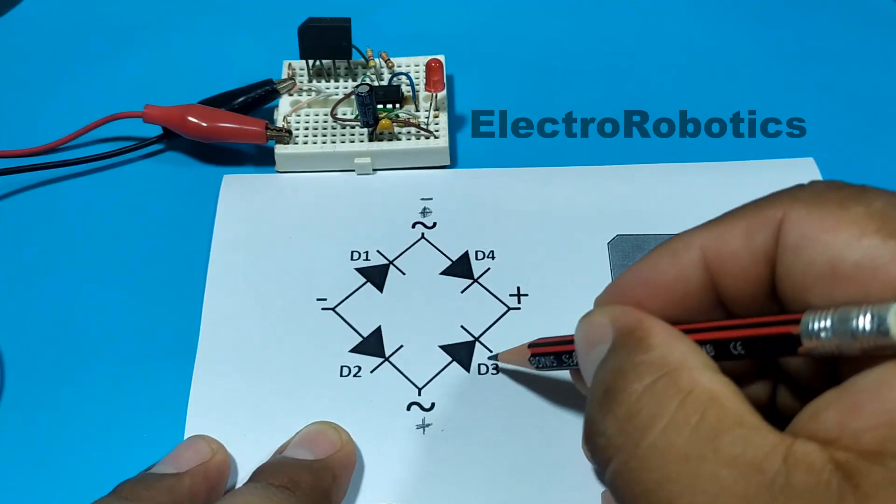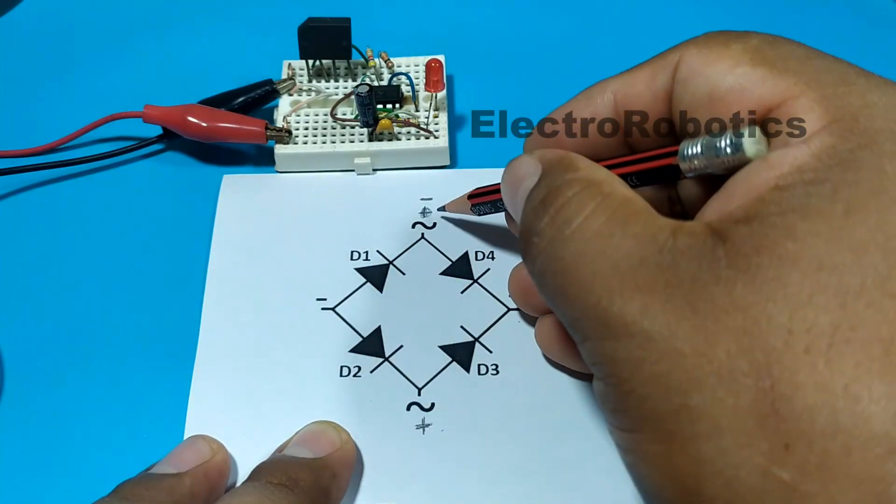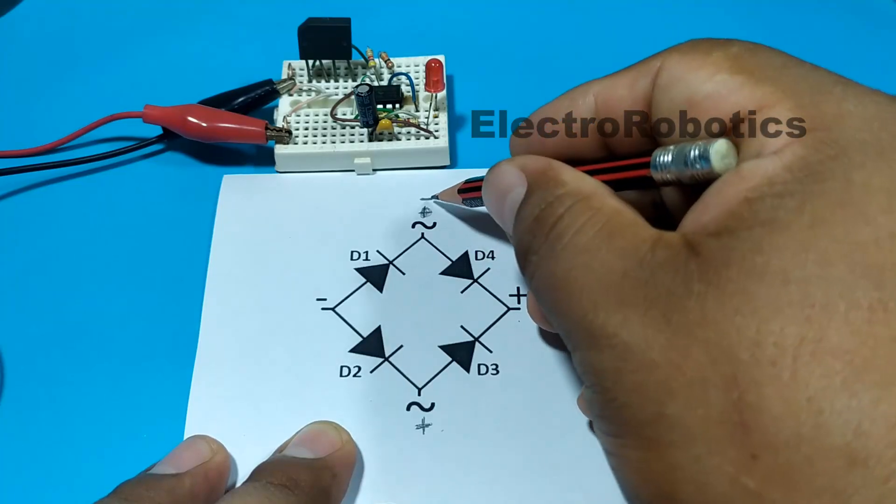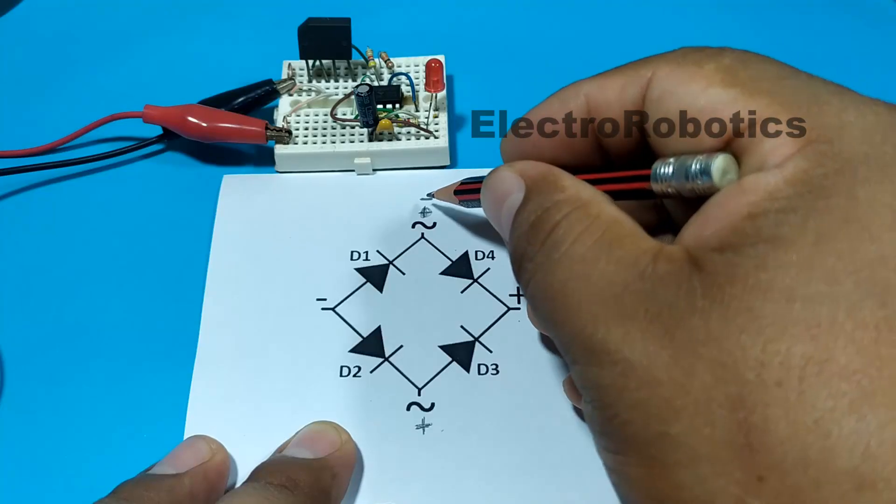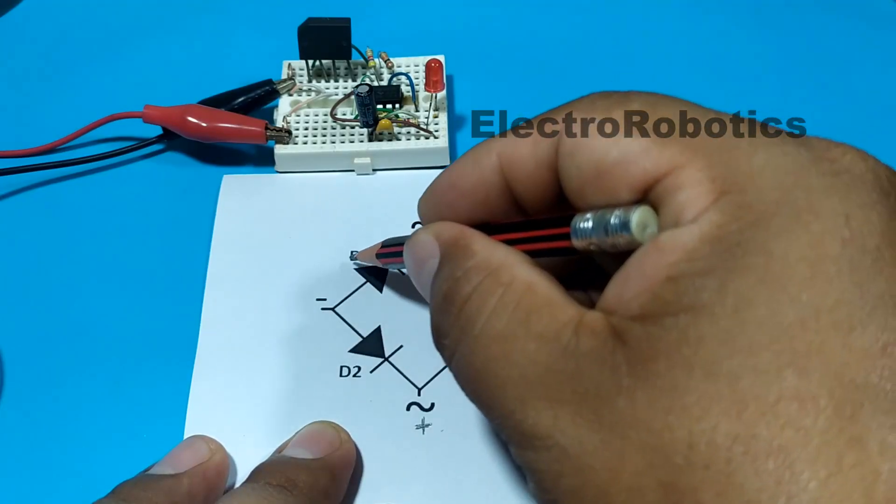Negative will not be able to pass through D4 because negative with anode will not be able to pass. But negative will be able to pass through D1. From here it will be able to go to negative.